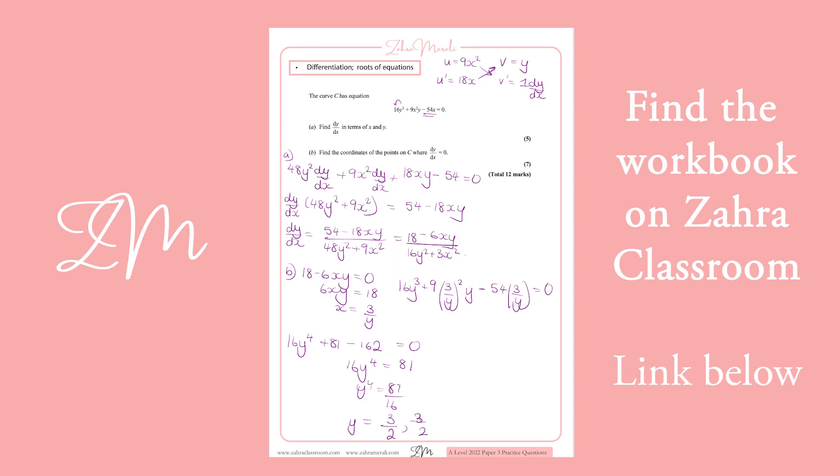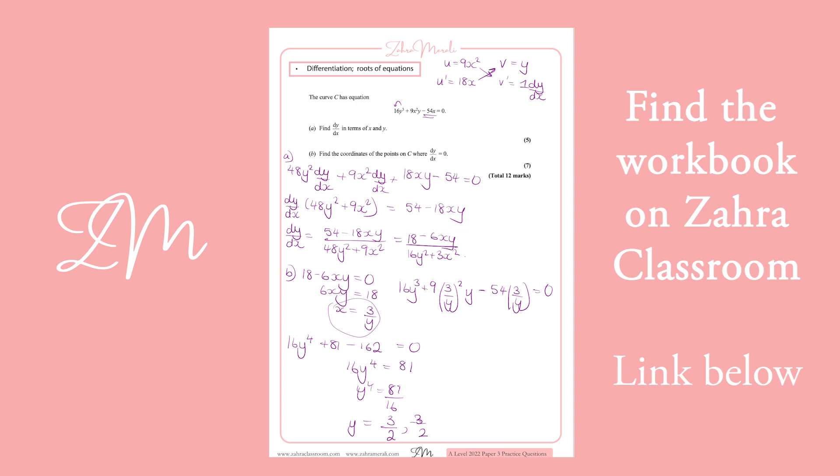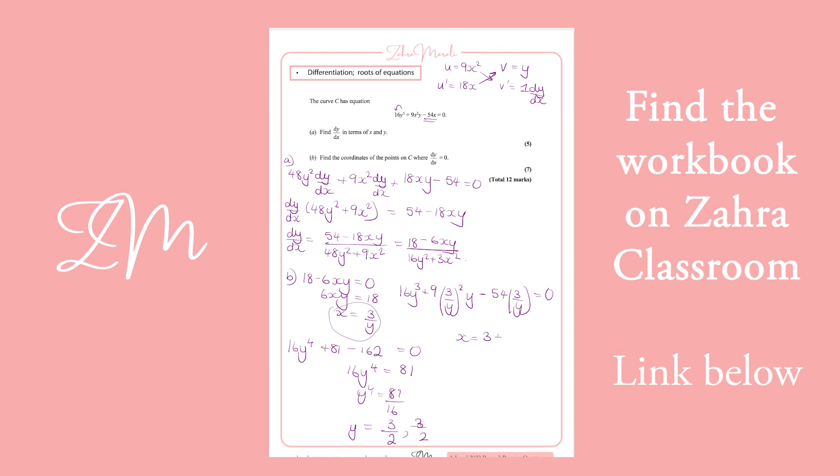We've got our two y values. We then need to substitute back to find our x coordinates using x = 3/y. So if we have 3 divided by 3/2, we're left with 2. So x = 3/(3/2) = 2.